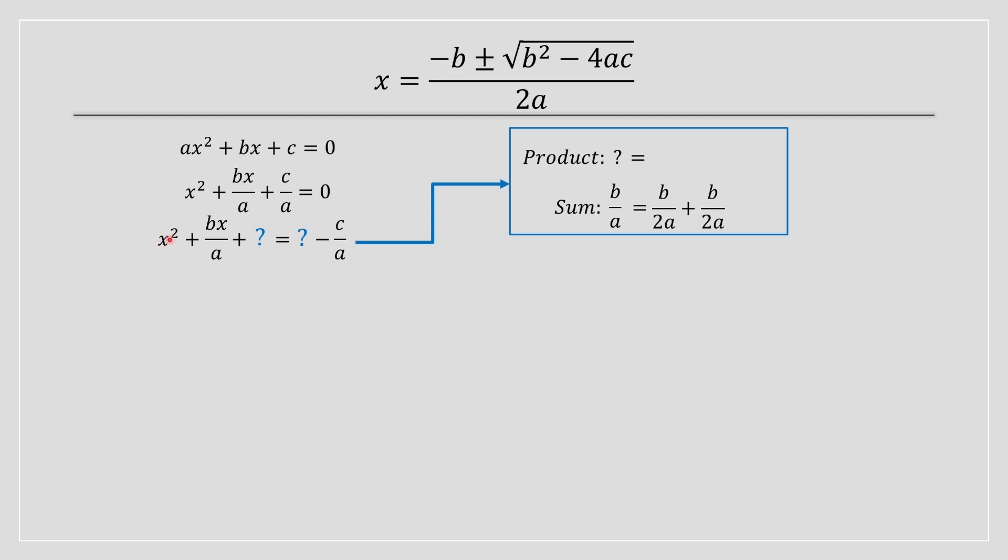And the product is 1 times the question mark. So what gives you b divided by a? b divided by 2a plus b divided by 2a gives you b divided by a. So those are our terms. And if you're going to use them for the sum, you must use the same terms for the product.